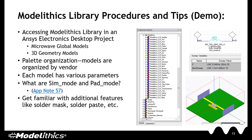Now we will demonstrate how to use the Model Ethics Library in ANSYS HSS. Our first demo will be accessing the Model Ethics Library in an ANSYS Electronics Desktop project. We will show you where to find the microwave global models, as well as where the 3D geometry models are located in the palette. We will also cover palette organization, as the models are organized by vendor, and the various model parameters available, as well as what are SIM mode and pad mode. For more details on this, please see AppNote 57 on our website.